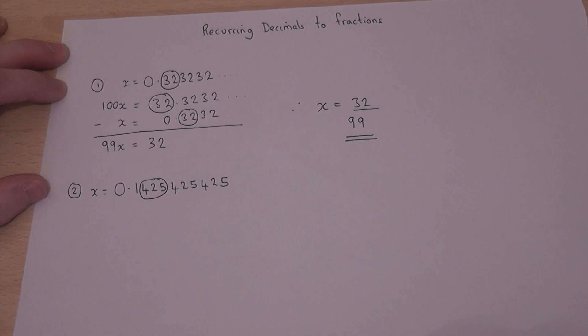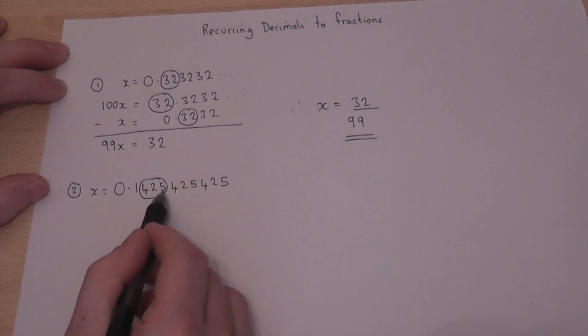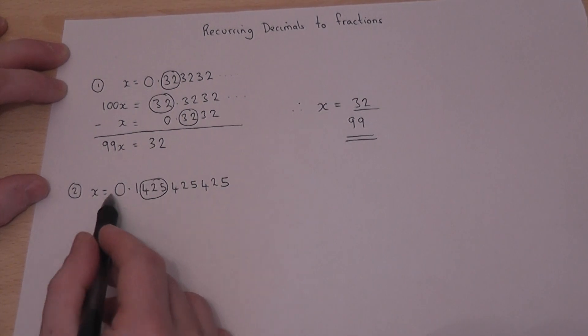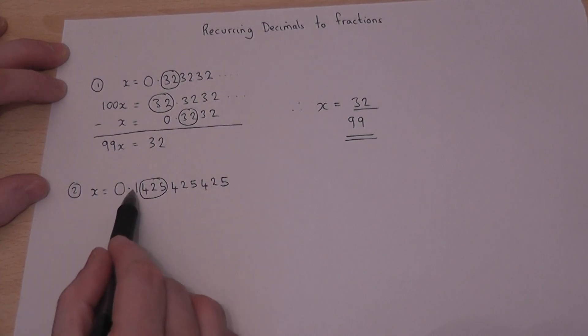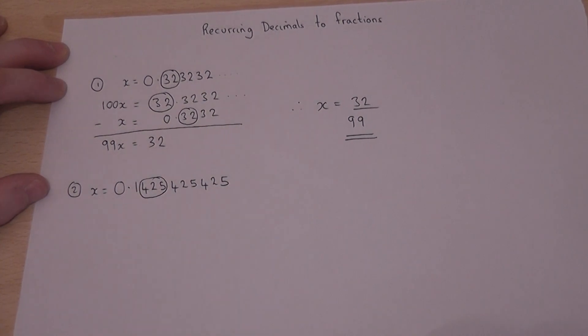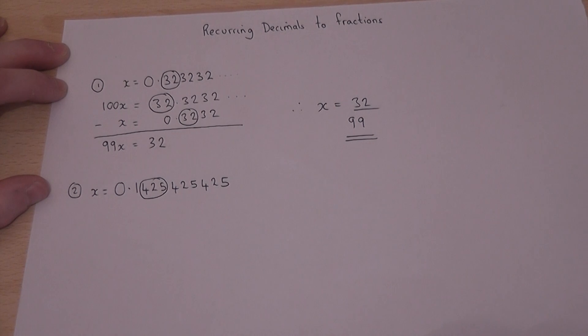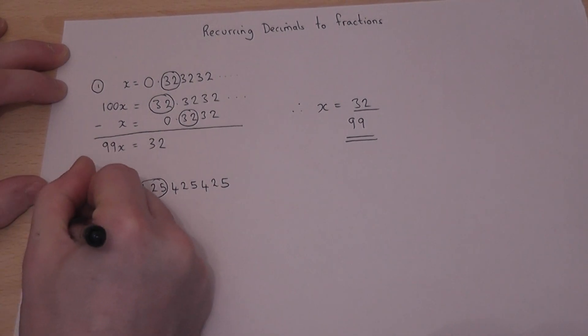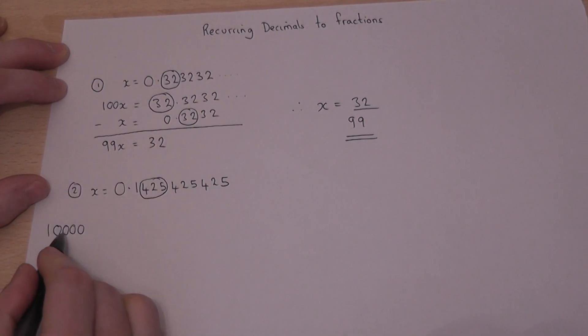So I want to times by enough tens to get that whole part to the left of the point. But there were 1, 2, 3, 4. There were 4 digits there in total. So I must times by 10,000. Four zeros.